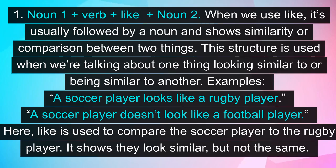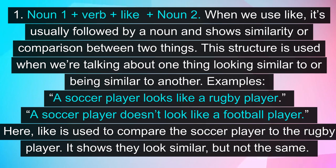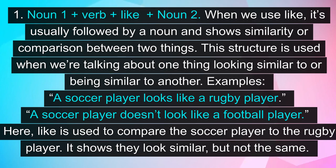Pattern 1: Noun 1 + verb + like + Noun 2. When we use 'like,' it's usually followed by a noun and shows similarity or comparison between two things. This structure is used when we're talking about one thing looking similar to or being similar to another. Examples: 'A soccer player looks like a rugby player.' 'A soccer player doesn't look like a football player.' Here, 'like' is used to compare the soccer player to the rugby player. It shows they look similar, but not the same.